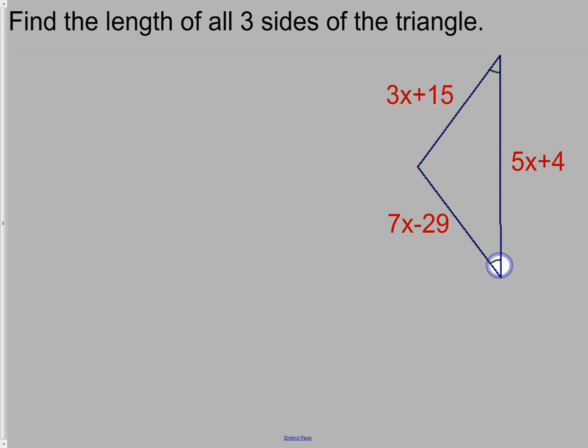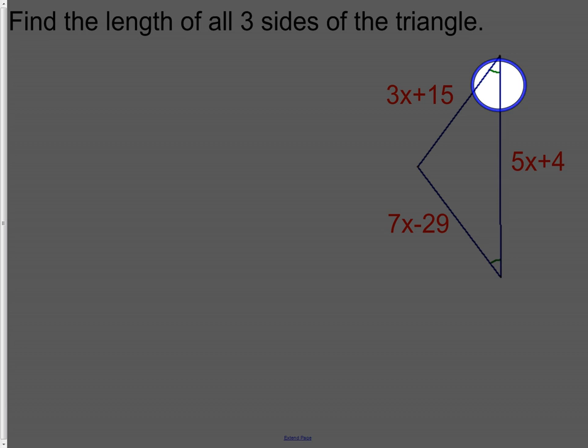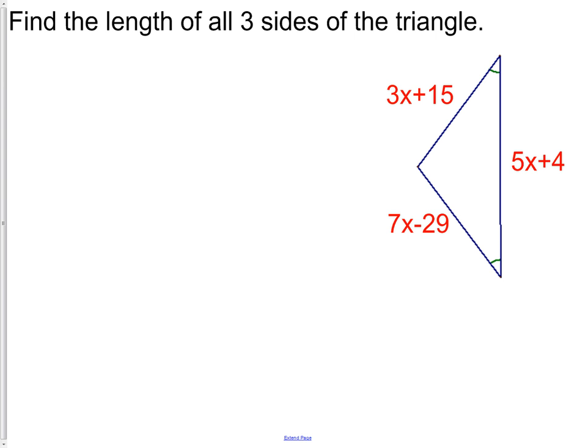I notice I have an angle in the bottom corner equal to an angle in the top corner. That means I have an isosceles triangle, which means this side and this side, which I just marked with the two green tick marks, must be congruent to each other.